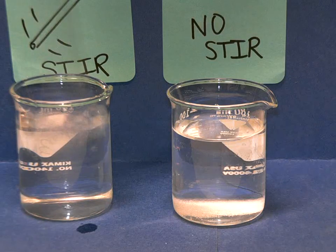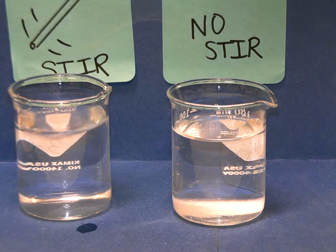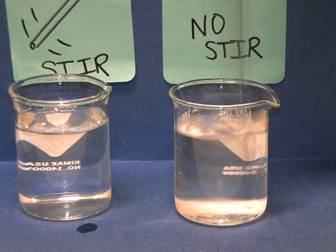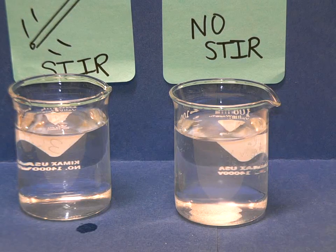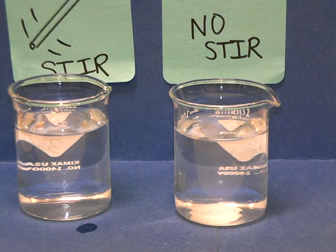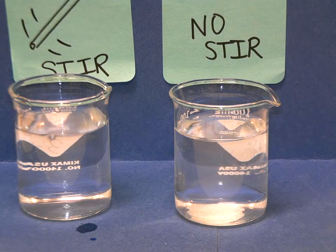At this point, all of the salt in the stir beaker has been dissolved. But if we look in the no stir beaker, and I'm just going to stir it a little so we can see the salt, we see that there's a good bit of it still sitting in the bottom that hasn't dissolved. So the beaker which had the agitation formed the solution faster.